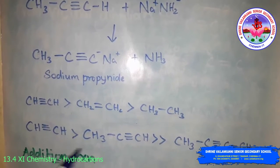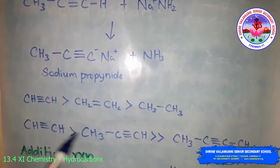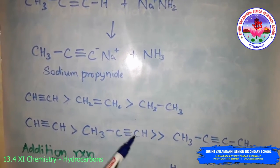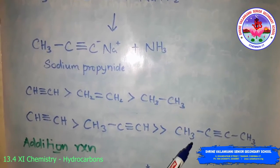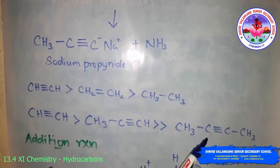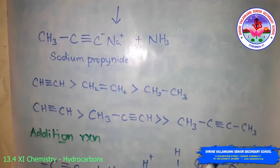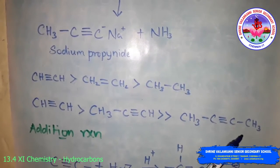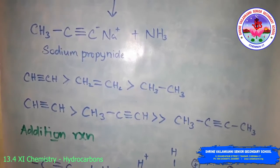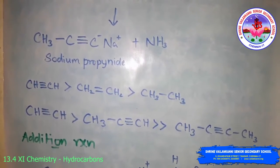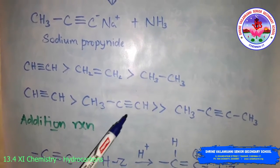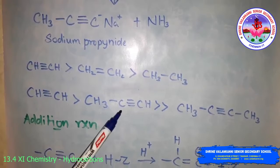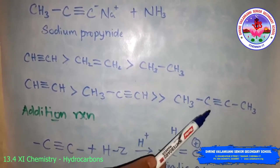Similarly, the acidic behavior comparison among alkynes is: ethyne > propyne > but-2-yne.